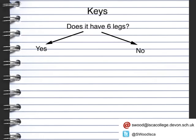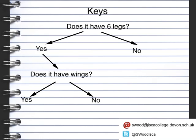We can start by looking at the number of legs they have. Does it have six legs? The answer can either be yes or no. Once we get to this point, we need to think about more questions that we can ask. The next question we're going to ask is: does it have wings? And the answer can be yes or no.